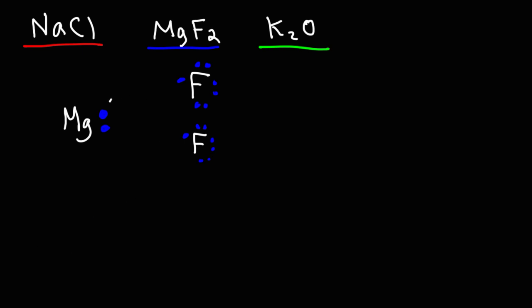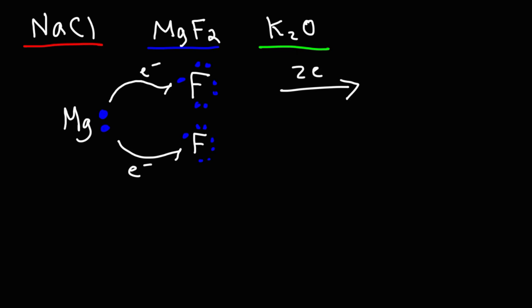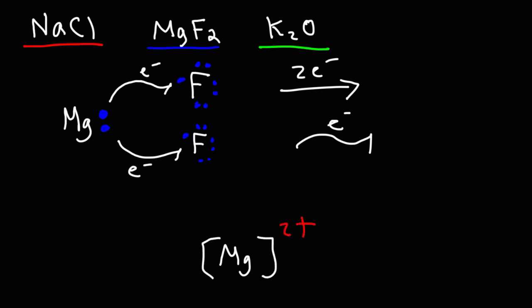Magnesium has two valence electrons. One of those two electrons will go to the first fluorine atom and the other one will go to the second fluorine atom. By the way, whenever you see a full arrow it represents the flow of two electrons; a half arrow represents the flow of one electron. When magnesium gives away its two electrons it's going to acquire a two-plus charge. When fluorine acquires one electron it's going to gain a minus one charge.